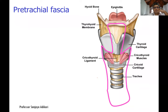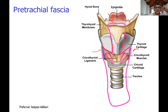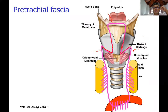The pre-tracheal fascia is attached superiorly to the body of the hyoid bone and to the thyroid cartilage — along its anterior part and oblique line. Laterally it blends with the carotid sheaths, and it goes all the way down into the superior mediastinum, blending with the adventitia of the arch of the aorta and the fibrous pericardium.